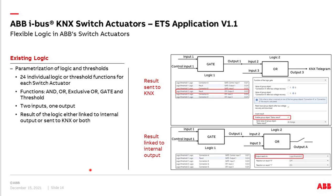Now the topic: Logic. We have so-called 24 individual logic blocks in each Switch Actuator, with two inputs and one output. You can use AND, OR, exclusive OR gate, and also thresholds. You can take one logic block, combine it with another — up to 20 in form principle — and finally output your logic result. The logic output can be either sent only to the KNX bus to be processed anywhere else, independent of the outputs.